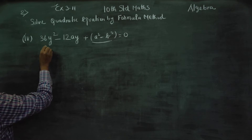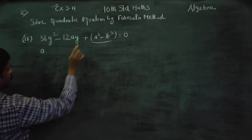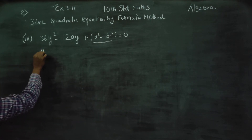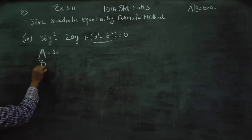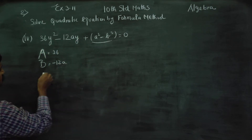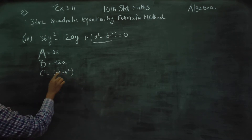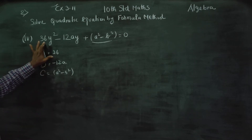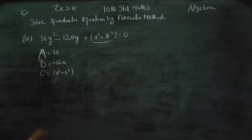A is equal to 36. B is equal to minus 12A. C is A squared minus B squared. We will now apply the formula method.